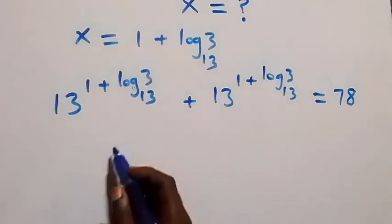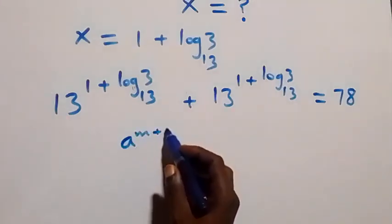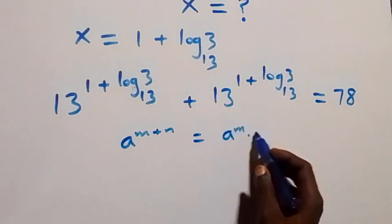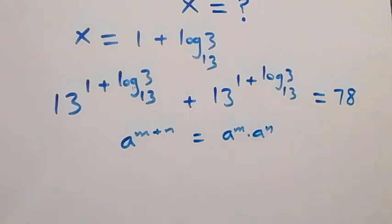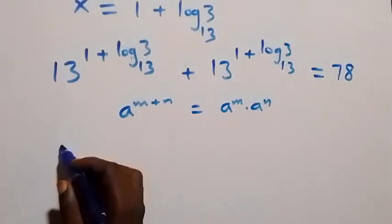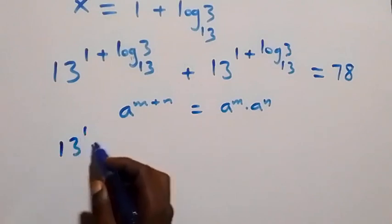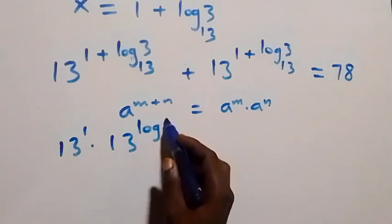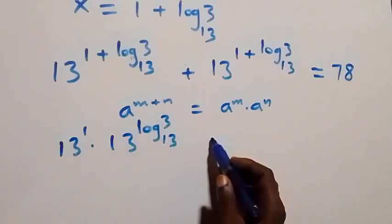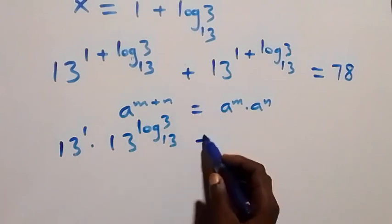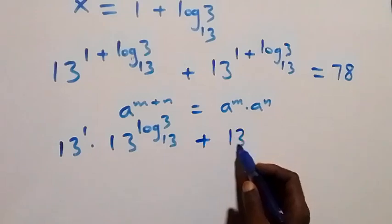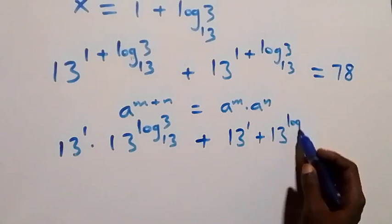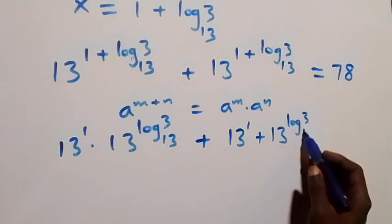From the exponent law — a raised to power (n plus n) is the same as a raised to power n times a raised to power n — we can separate this as 13 raised to power 1 times 13 raised to power (log 3 to base 13), plus 13 raised to power 1 times 13 raised to power (log 3 to base 13).